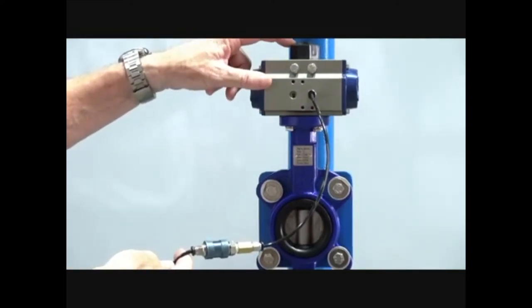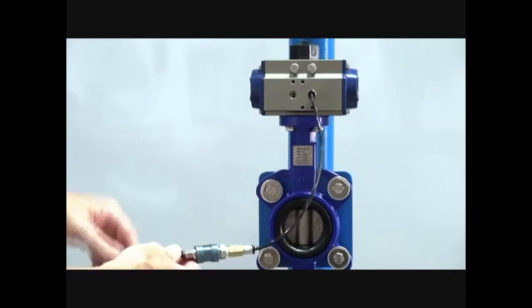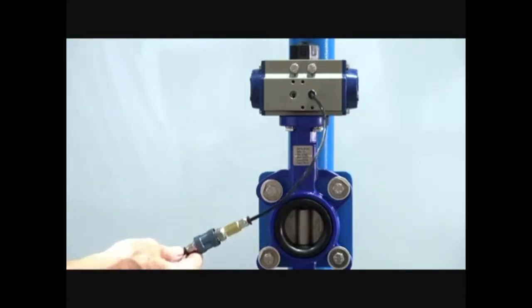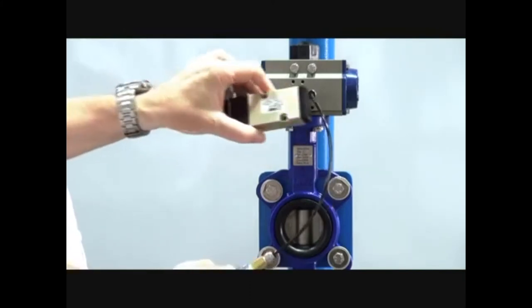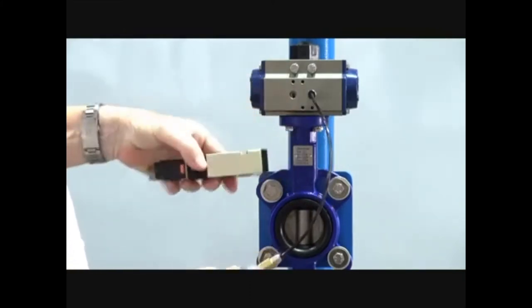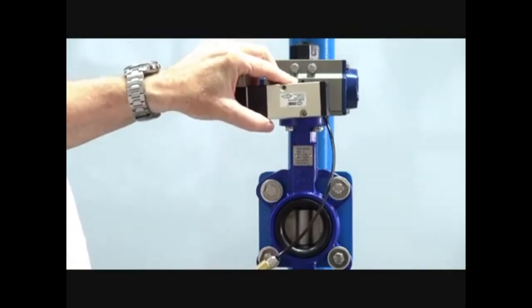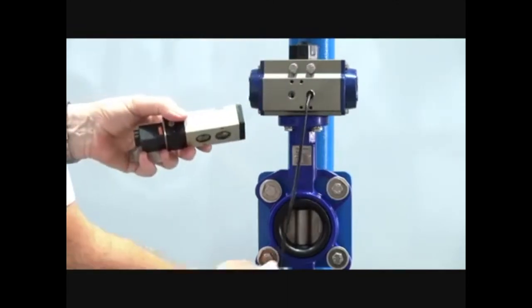We recommend for this type of actuator, the spring return unit, to put a 5.2 valve. This has a new interface so the valve mounts directly onto there. The reason is that the air coming from your main compressed air supply will be filtered and lubricated.